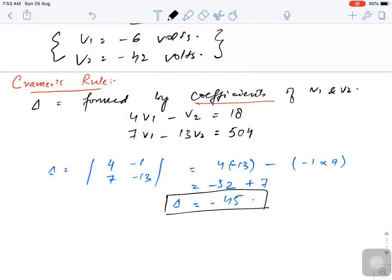Now let us come to delta 1. What is delta 1? Delta 1 is formed by replacing column 1 in delta by the right hand side of the equations.